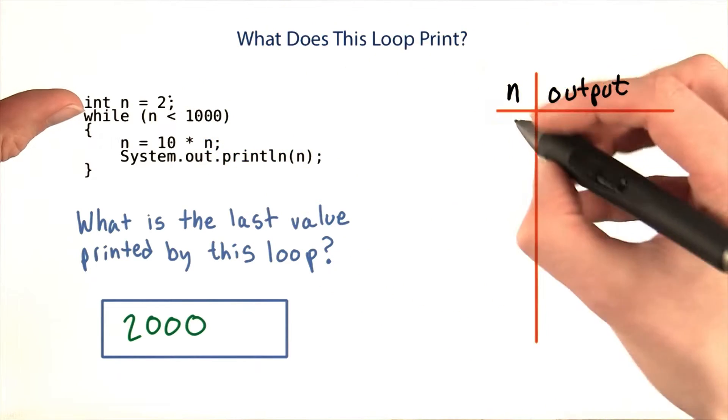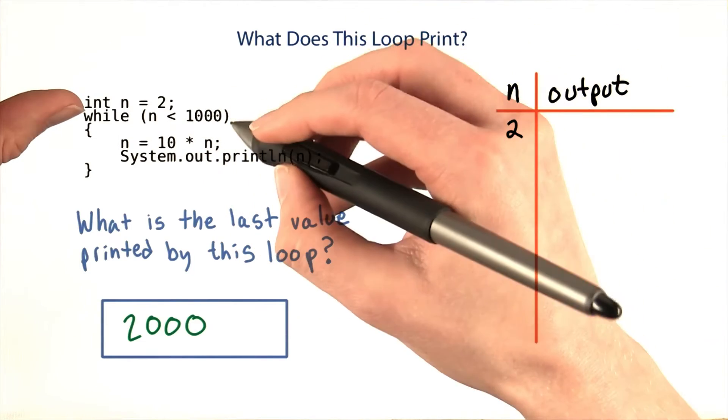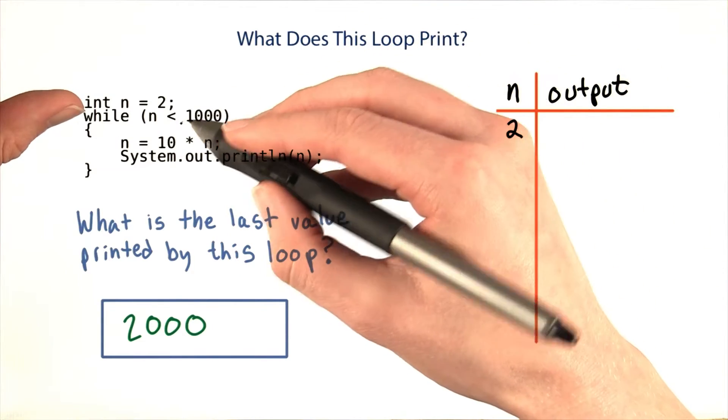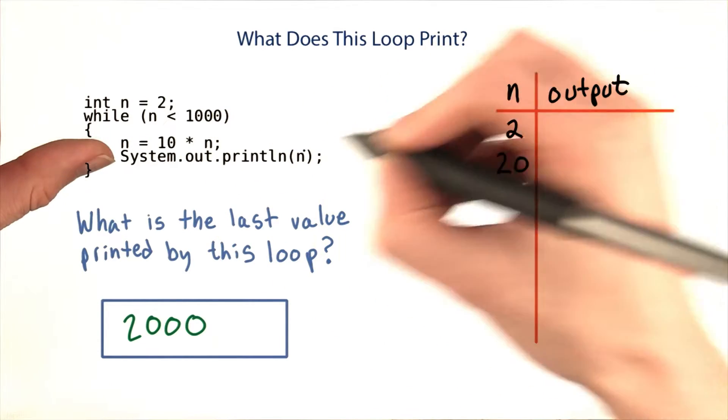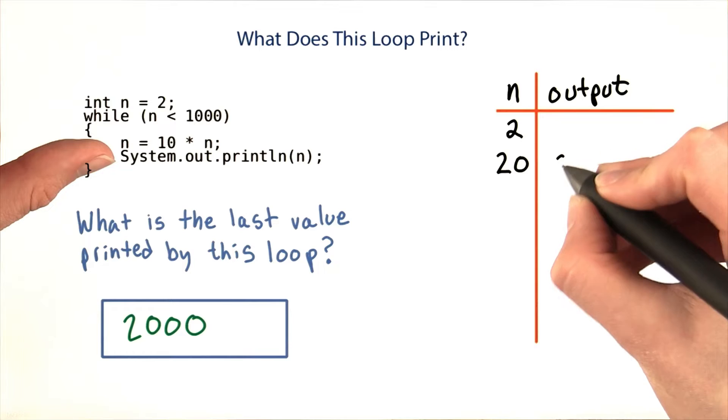I start by setting n to 2, and then I check n is less than 1,000, which is true. 2 is less than 1,000. So I set n to be 10 times 2, and then I print out n. So I print out 20.